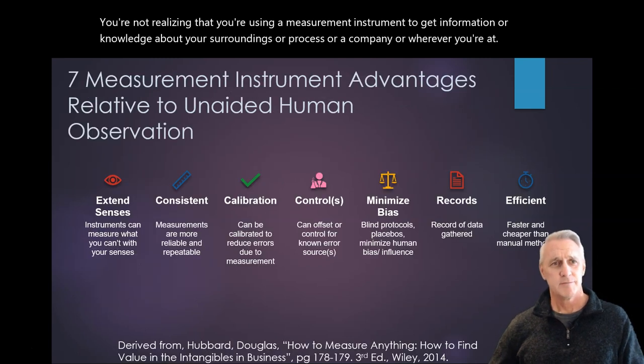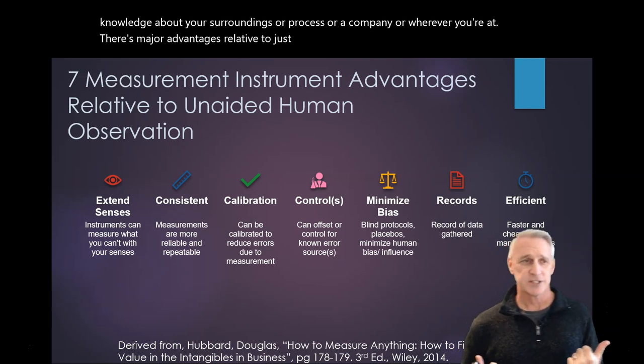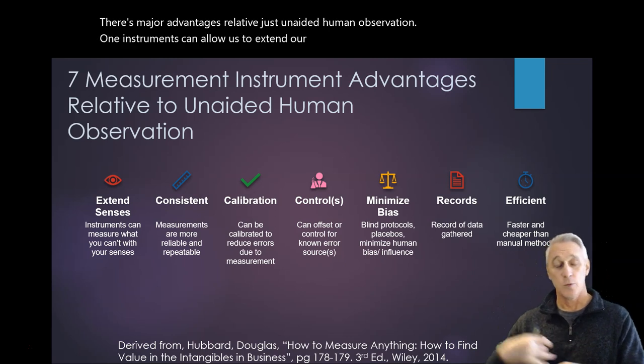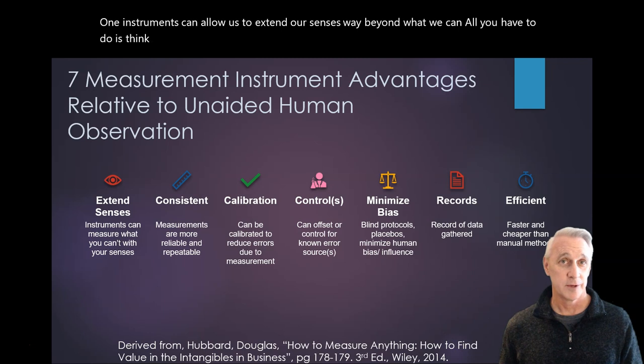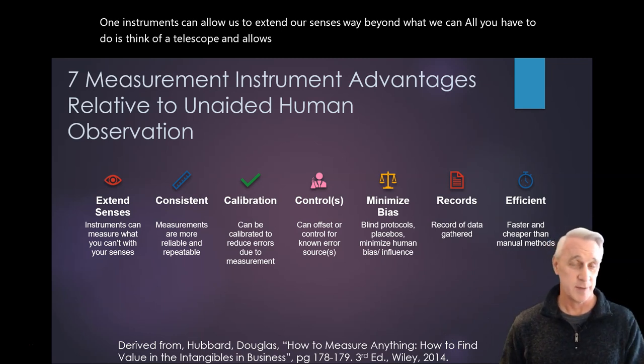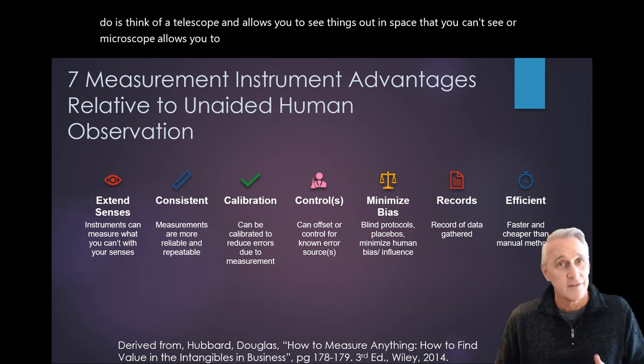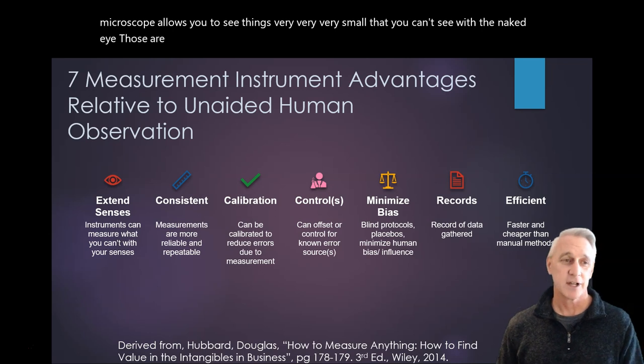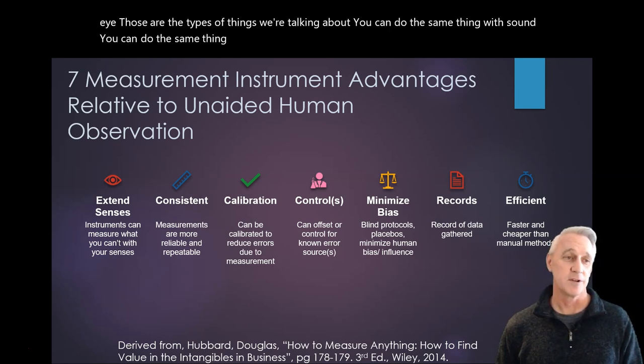Now there's major advantages relative to just unaided human observation. One, instruments can allow us to extend our senses way beyond what we can. All you have to do is think of a telescope that allows you to see things out in space that you can't see. Or a microscope allows you to see things very, very, very small that you can't see with the naked eye. You can do the same thing with sound, you can do the same thing in a bunch of different domains.